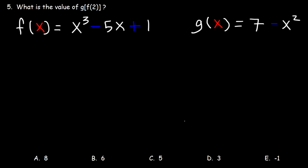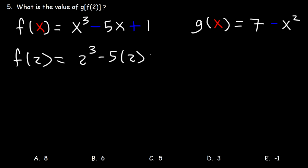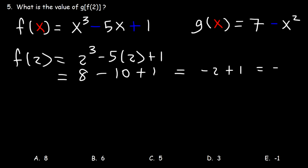Number 5: what is the value of g of f of 2? First, let's find the value of f of 2 by replacing x with 2. 2 to the third is equal to 8; 5 times 2 is 10; and 8 minus 10 is negative 2. Negative 2 plus 1 is negative 1. So that's the value of f of 2.